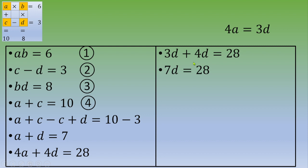3 plus 4, this is 7D equals 28, so D equals 4.